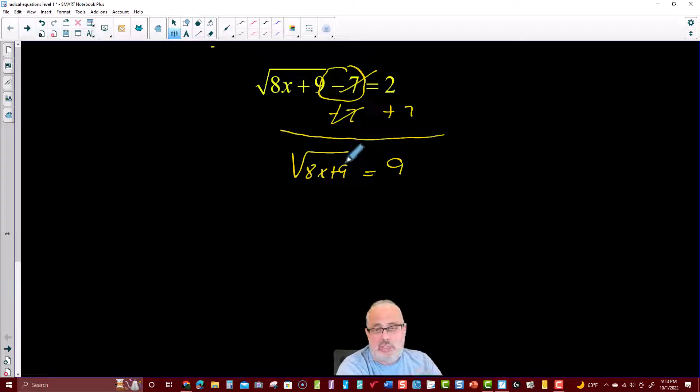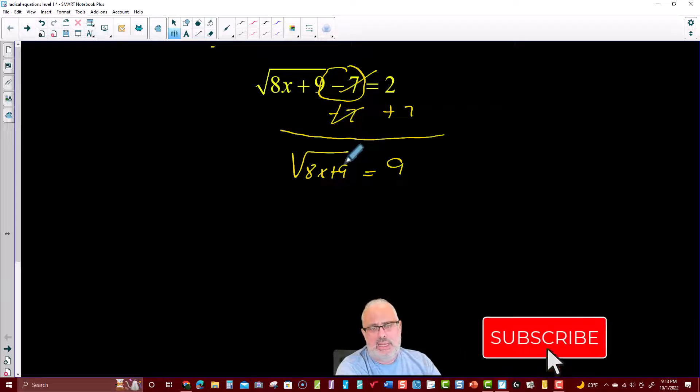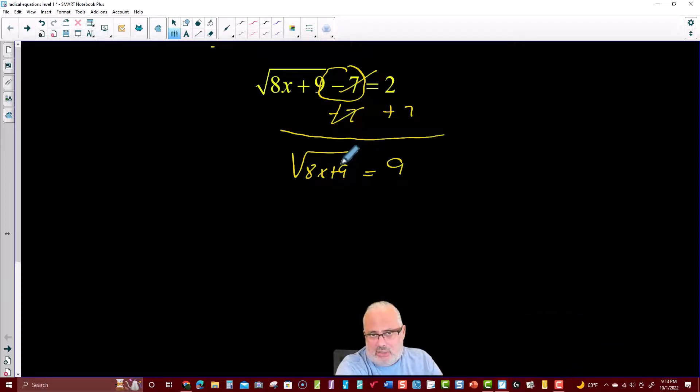Today, we're going to use the principal root. What is the principal root? The positive answer when you find the square root. Let's say the square root of 36 is 6 and minus 6, but we're going to use only 6, which is the principal root.